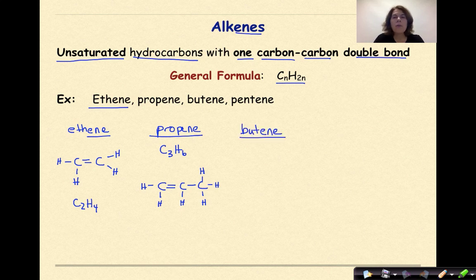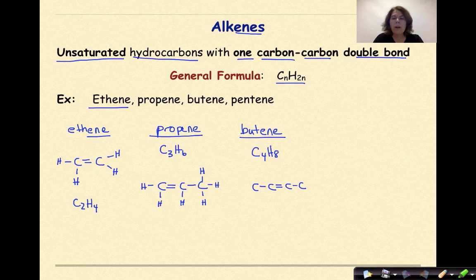Let's go on to butene. The molecular formula for butene is C4H8. I'm going to put down four carbons and place the double bond between one pair, with single bonds between the rest. In this course, we're only going to have one double bond per molecule. Every other carbon needs to have its four bonds, so I fill in the hydrogens, making sure every carbon has exactly four bonds — not five, not three, but four.